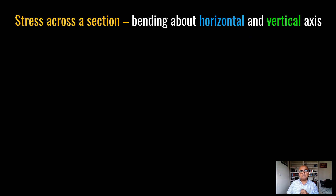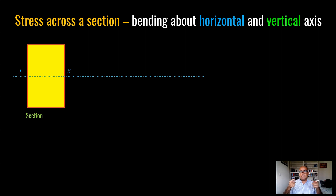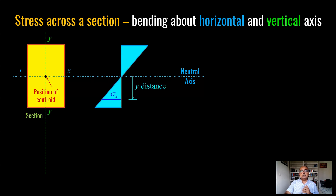How do we work out stress across a section when the section is bending about the horizontal axis and vertical axis? If I am applying loading in the horizontal direction or holding a ruler vertically and applying loading, the neutral axis does not have any stress at all. The top portion is in compression and the bottom portion is in tension. The stress depends on the distance from the neutral axis — the greater the distance, the greater the stress. This is what we call linear stress distribution.